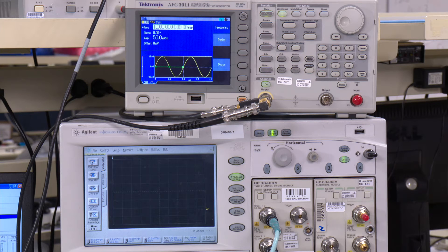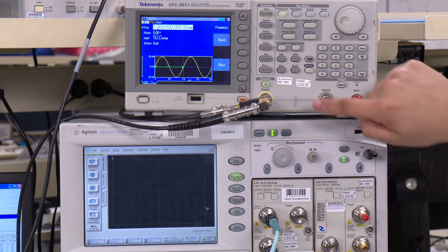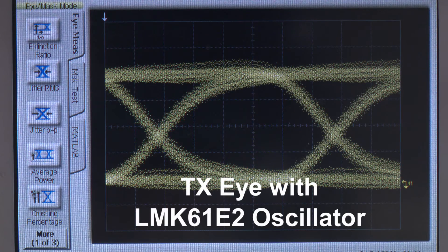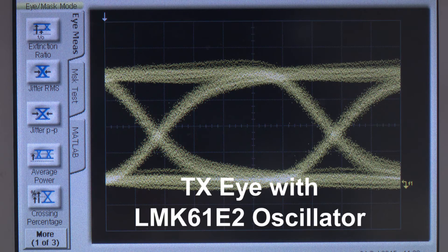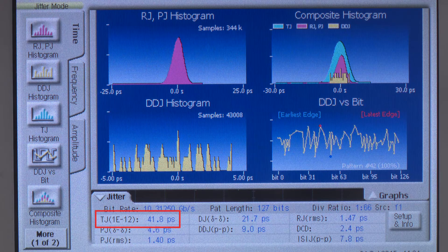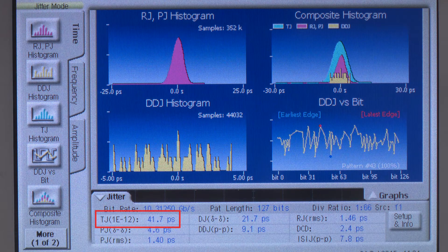Now, let's look at the transmit eye again using TI's oscillator without noise on the power supply. Let's see how this translates to total jitter. This correlates to about 41 picoseconds total jitter, just like the competitor's part.